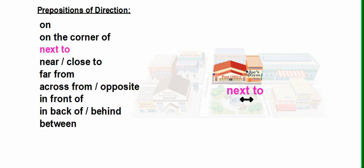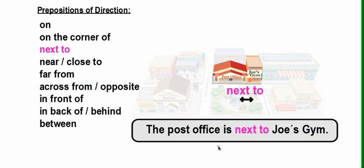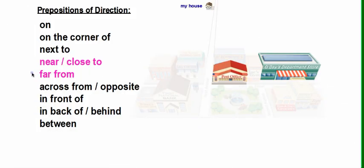Next, we have 'next to.' With 'next to,' we indicate something that is touching or very, very close to another thing. For example, the post office is next to Joe's Gym. Again, 'next to' is when two things are touching or very, very close.